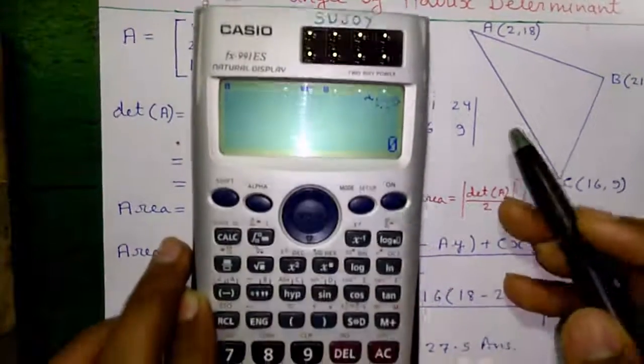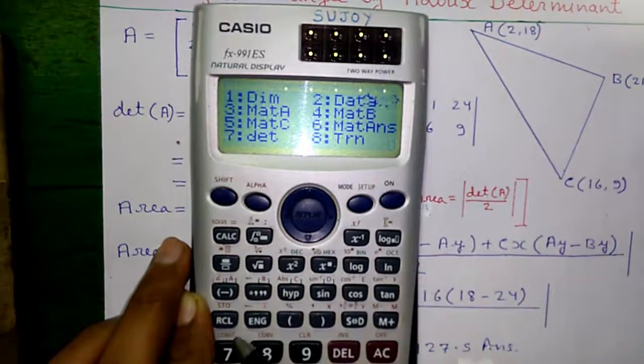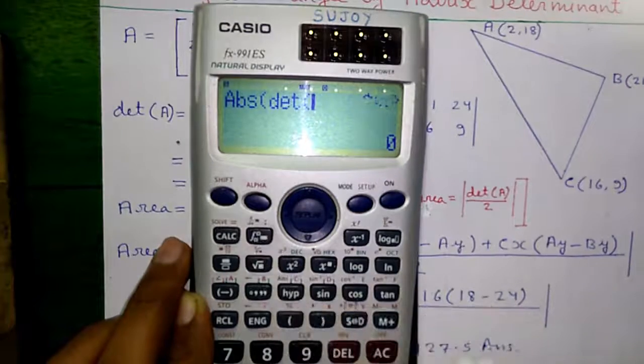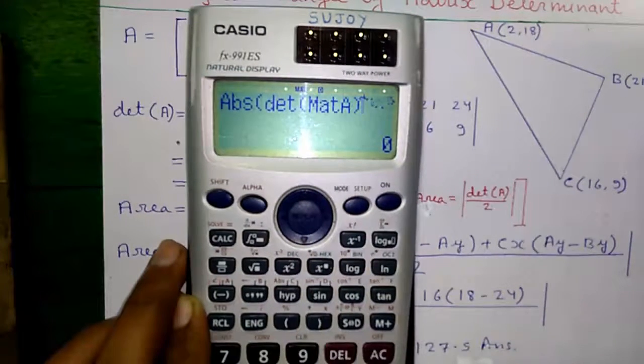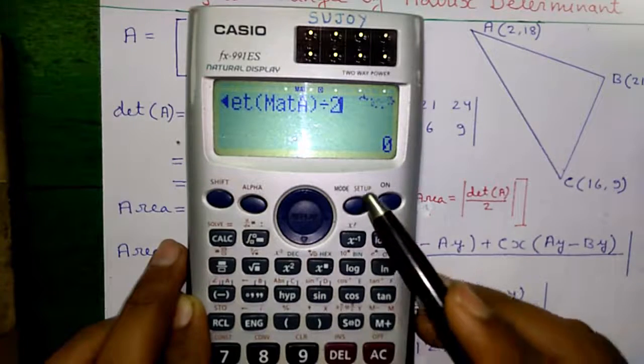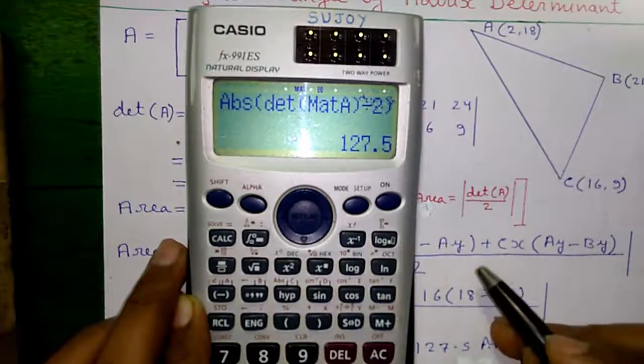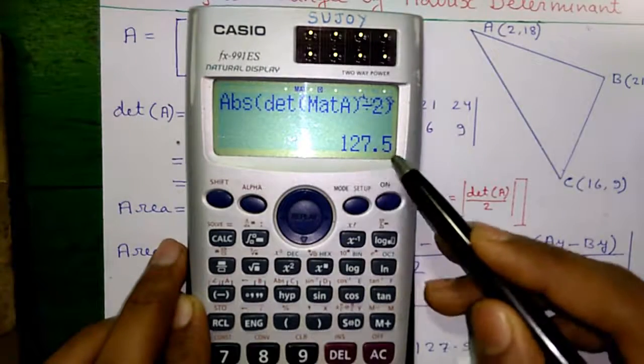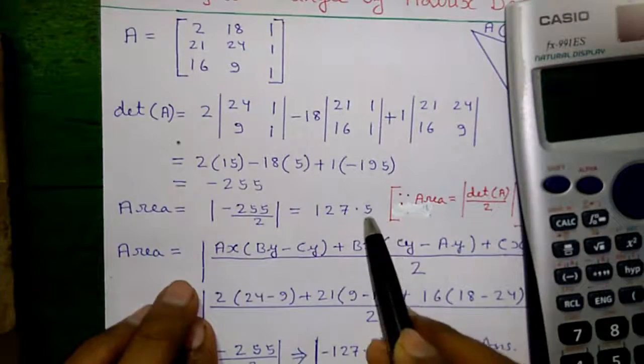Press shift and hype button to get absolute operator. Shift 4, 7 for determinant. Shift 4, 3 for matrix A. Bracket close, divided by 2, close. Press equals to, that is equal to 127.5 square units, which is this value.